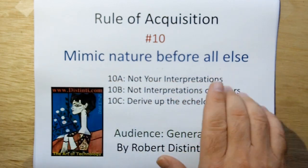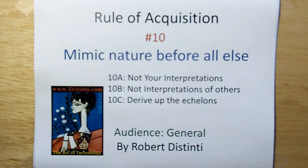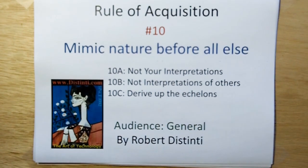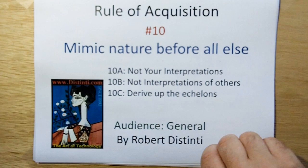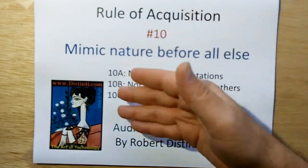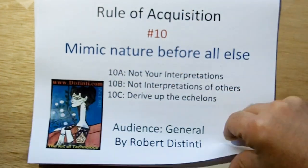Models must mimic nature, not your interpretations. Models must mimic nature, not interpretations of others. And derive up the echelons. These are all related to the same core of logic. So this Rule of Acquisition is actually broken into three sub-pieces.